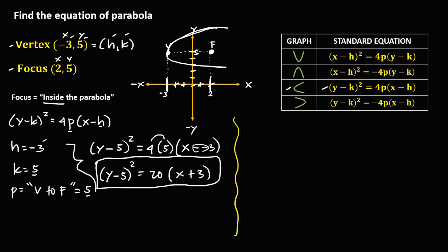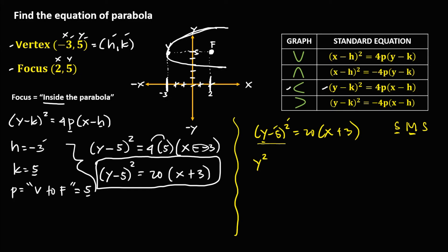To expand to the general equation: (y − 5)² = 20(x + 3). We expand the square of the binomial using SMS — S: the square of the first term, y², M: multiplication, 2 times negative 5 equals negative 10y, S: square of the second term, 5² = positive 25. Then distributing the right side: 20x plus 20 times 3 equals positive 60.